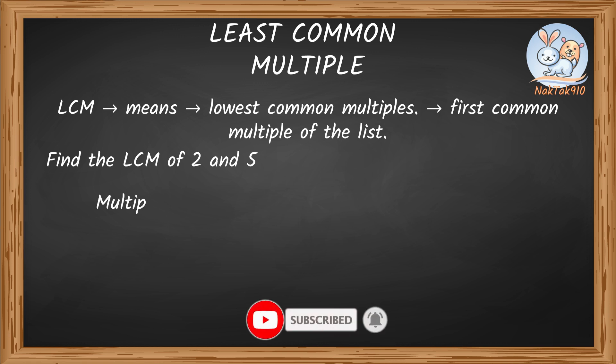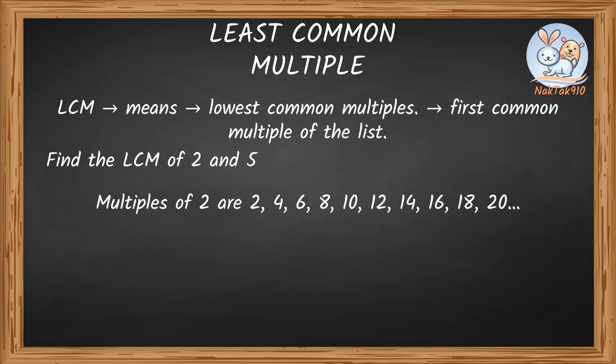Yeah, sure. Let's first list out the multiples of 2 and 5. Multiples of 2 are 2, 4, 6, 8, 10, 12, 14, 16, 18, 20, and so on. Multiples of 5 are 5, 10, 15, 20, 25, 30, and so on.